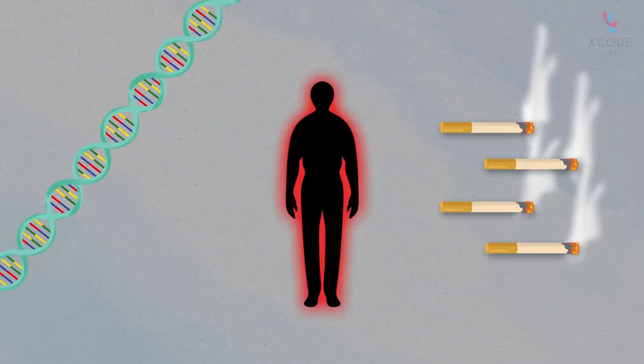Other genes involved in nicotine dependence play a role in dopamine production on exposure to nicotine, nicotine absorption, and serotonin pathways. Analyzing these genes can give you insights into your risk for nicotine dependence.